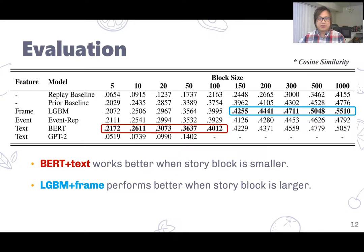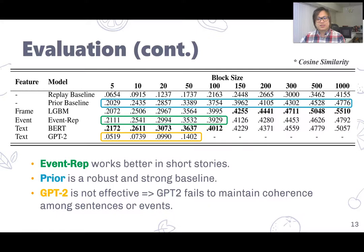Here is the evaluation result. Note that numbers here are cosine similarities. From this table, we can see that first, BERT with text works relatively well when the block size is small. However, when the block size increases, such as larger than 150, LGBM with frame works better. Next, we also noticed that event representation works better in short stories, which is similar to the BERT baseline. And prior is actually a very robust and strong baseline throughout the experiment. On the other hand, GPT-2 doesn't really work. We assume it is because GPT-2 is not good at maintaining coherence among sentences or events.